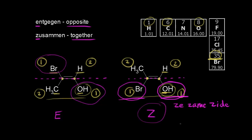The EZ system is more inclusive than the cis-trans terminology, so EZ is often a better way to determine the configuration of a double bond.